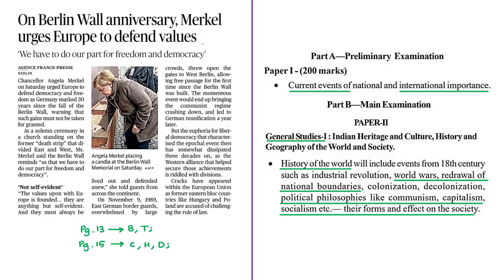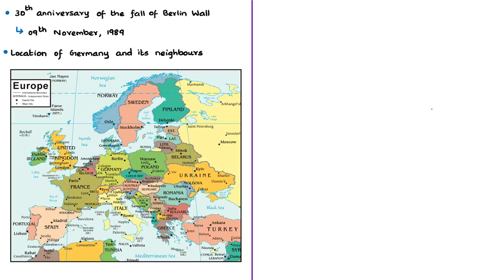This news article is in relation with the 30th anniversary of the fall of the Berlin Wall. Note that the Berlin Wall fell on 9th November 1989. The syllabus linking of the news article is given here for your reference. Before understanding the Berlin Wall, let us first understand the geographical location of Germany and its borders.